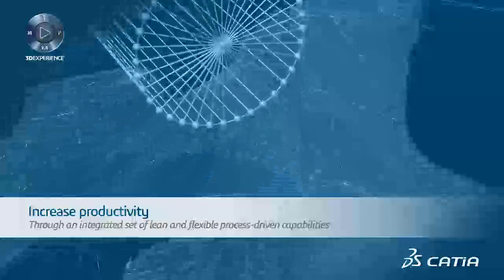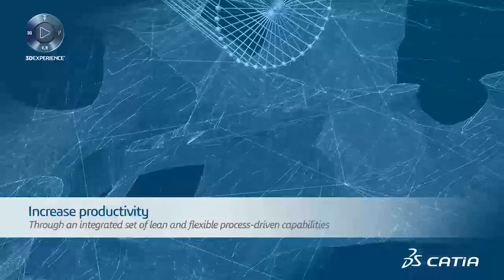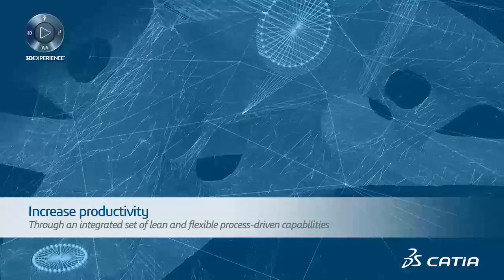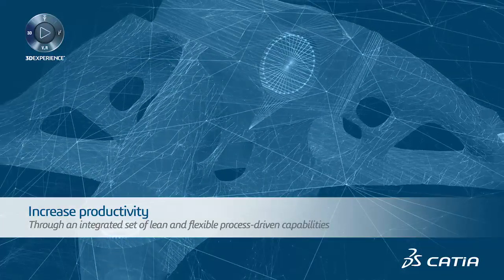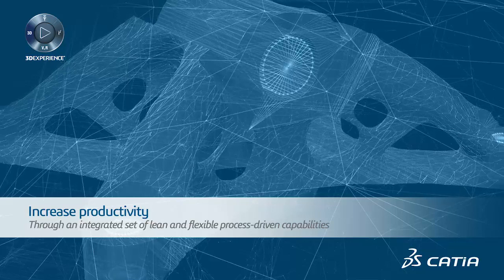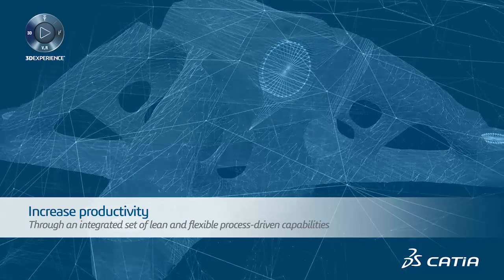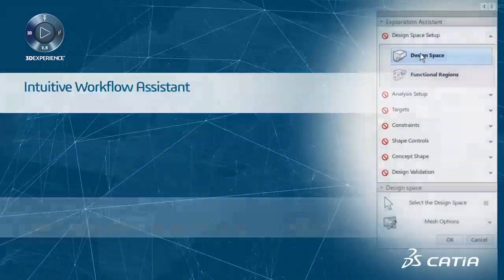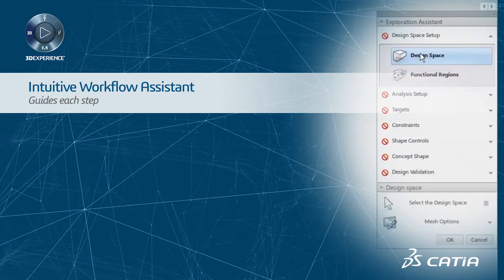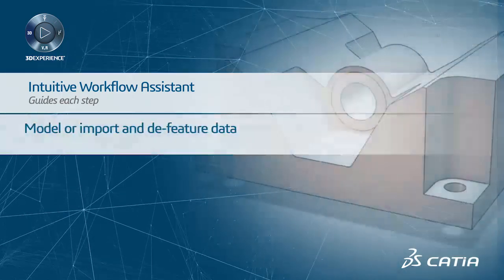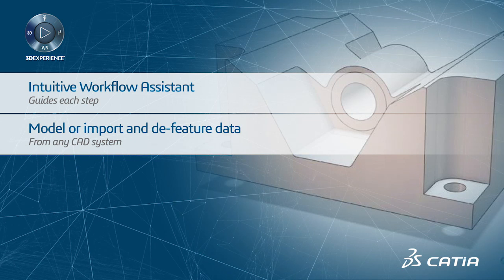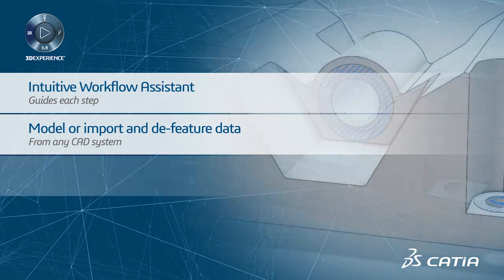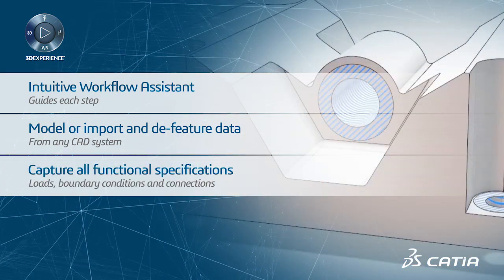To summarize, CATIA delivers a unique functional generative design solution that increases productivity in an integrated set of lean and flexible process-driven capabilities. An intuitive workflow assistant guides each step. You can either model or import and defeature data from any CAD system. Apply loads, boundary conditions, and connections.